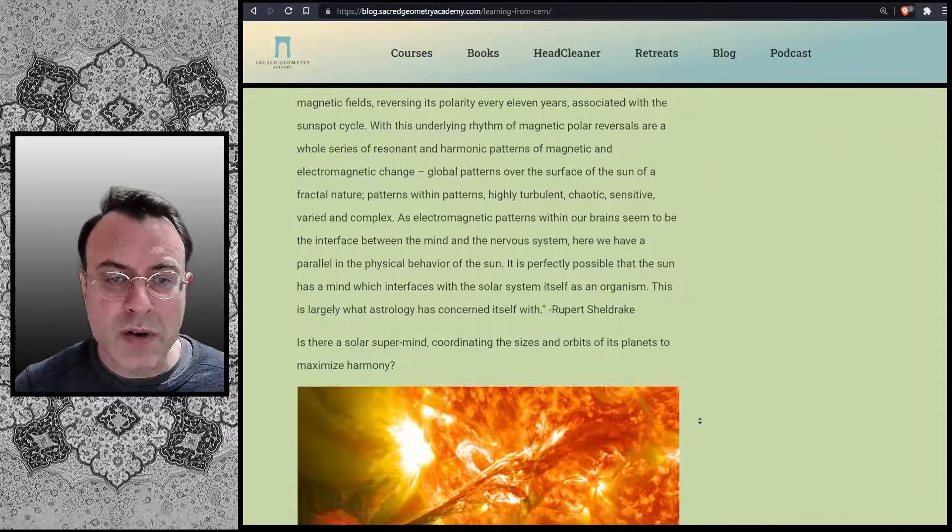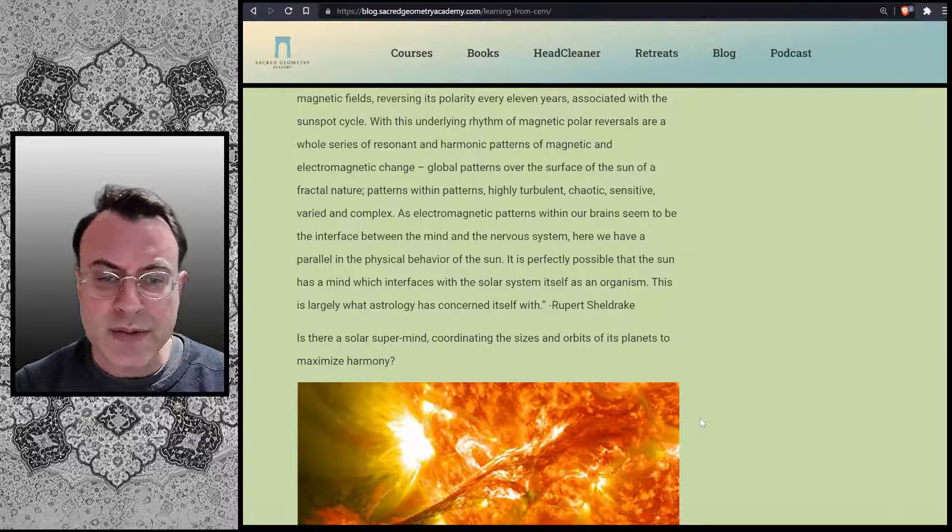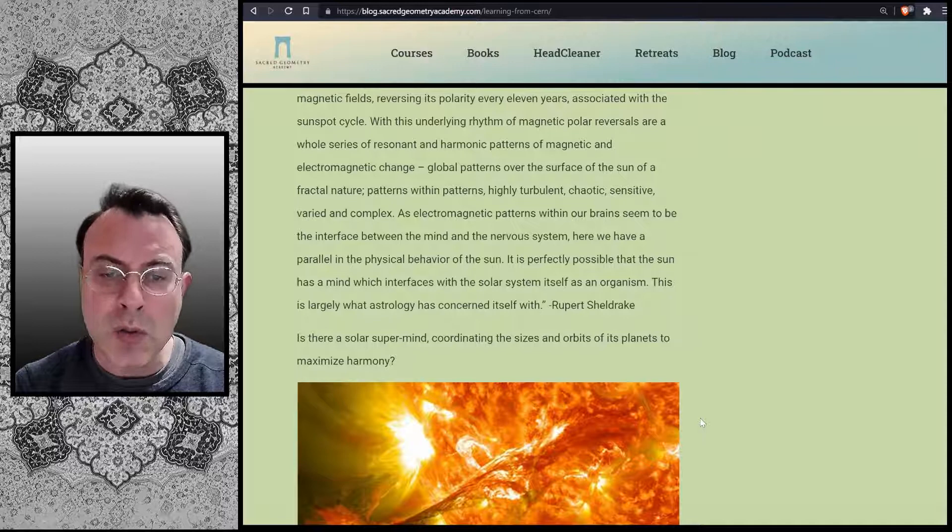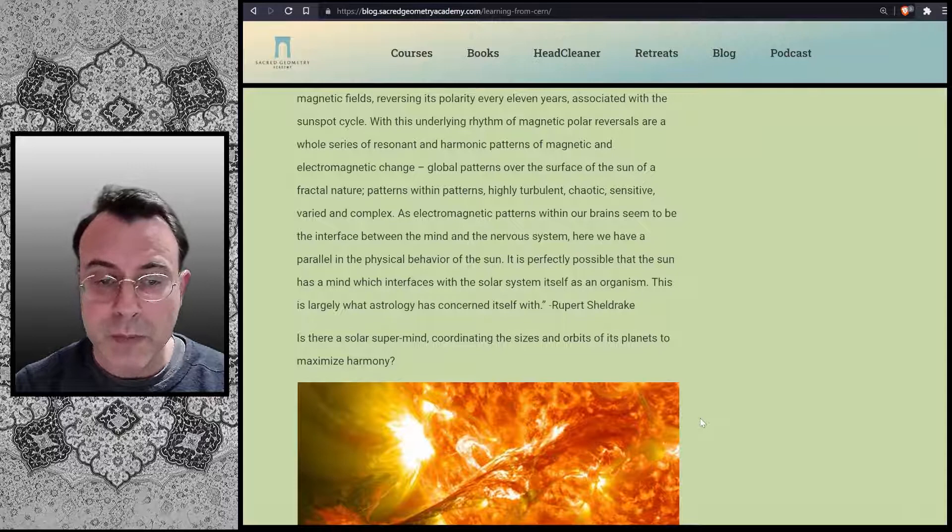We now know that the Sun has a complex system of magnetic fields, reversing its polarity every 11 years associated with the sunspot cycle. With this underlying rhythm of magnetic polar reversals are a whole series of resonant and harmonic patterns of magnetic and electromagnetic change, global patterns over the surface of the sun of a fractal nature, patterns within patterns, highly turbulent, chaotic, sensitive, varied, and complex.